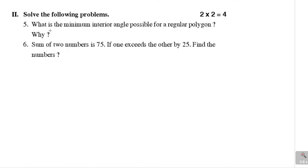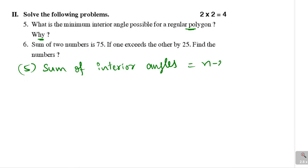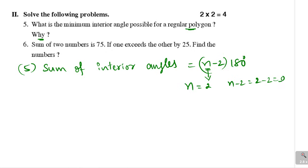Fifth problem: What is the minimum interior angle possible for a regular polygon, and why? We know that the sum of interior angles equals (n minus 2) times 180 degrees. As n increases, the interior angle also increases. We need the minimum valid value of n. If n equals 2, then n minus 2 equals 0, so there will be no angle. That means n must be greater than 2.